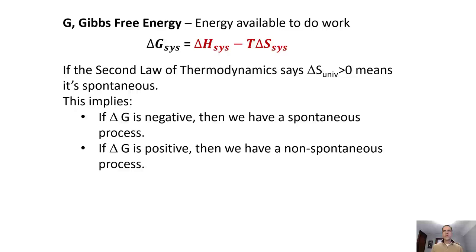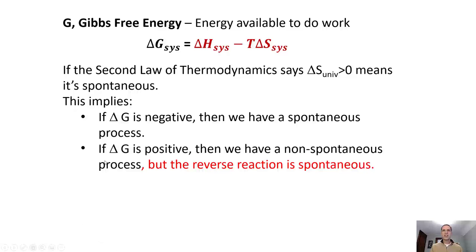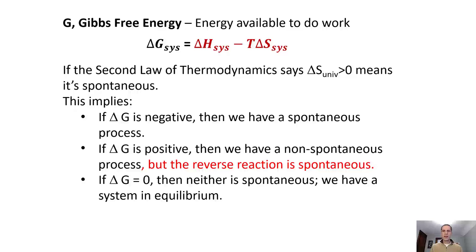Going back to the second law: delta S of the universe greater than zero means spontaneous. If delta G is positive, not only is the forward reaction non-spontaneous, but the reverse reaction is actually spontaneous. And if delta G equals zero, then neither the forward nor the reverse is spontaneous — this is what we call a system in equilibrium. We'll touch more on equilibrium in the future.